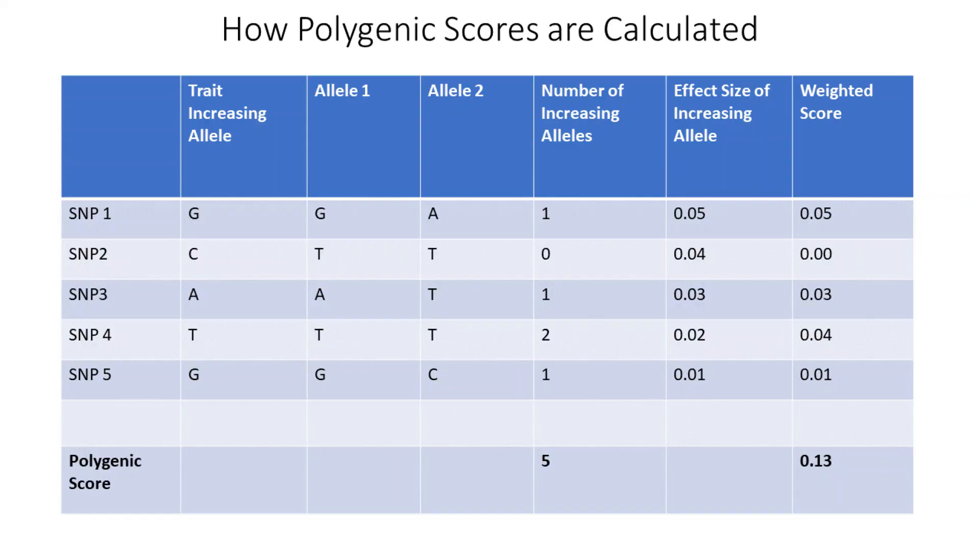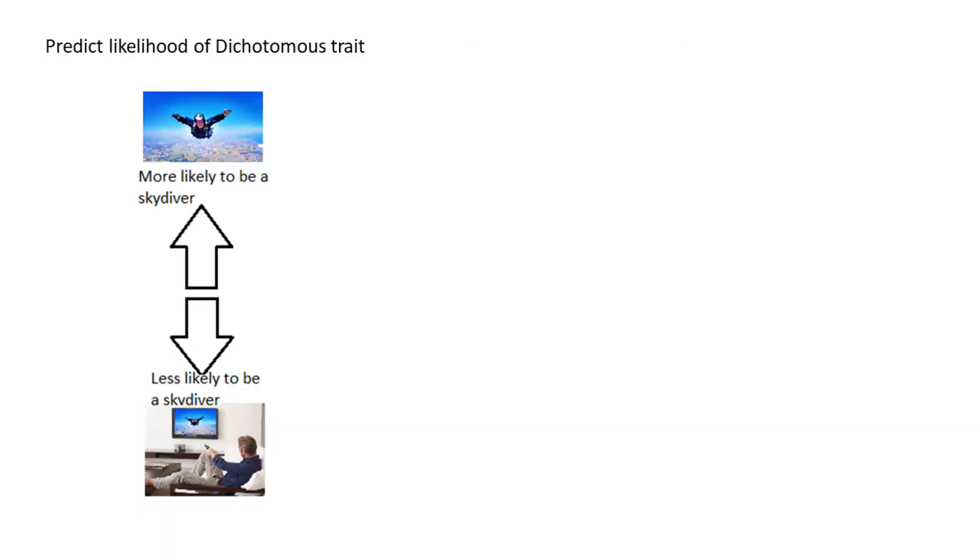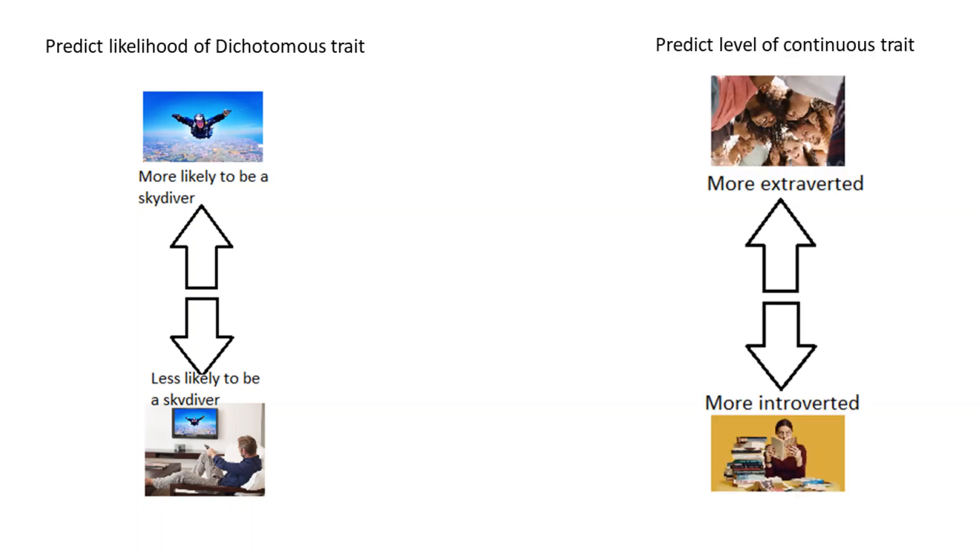Polygenic scores are generated using algorithms which sum together all the genetic variants possessed by an individual which are known to influence the likelihood or level of a trait, weighted by their effect size. This value produced by the polygenic score can be used to make predictions about the relative likelihood of a dichotomous trait such as having a diagnosis of major depression or signing up for skydiving lessons, or a level of a continuous trait such as height or extraversion scores.